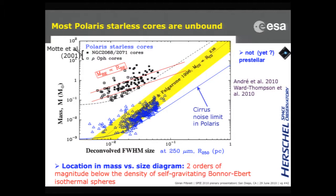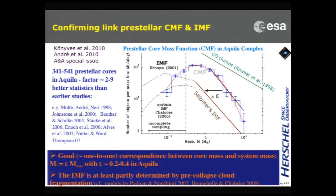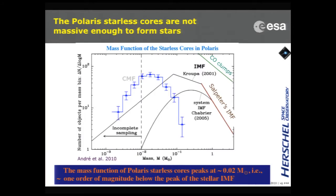Another way of looking at that is to plot the core mass function (CMF) of the clumps. In the Aquila region, the CMF follows basically the IMF but at a higher level, suggesting it will give rise to an IMF of the expected shape — the difference between the IMF and CMF reflecting some kind of efficiency. In the Polaris area, the CMF is at a lower mass range than the IMF, and there's no way these clumps are going to make stars unless they could acquire more mass, but they are not gravitationally bound.